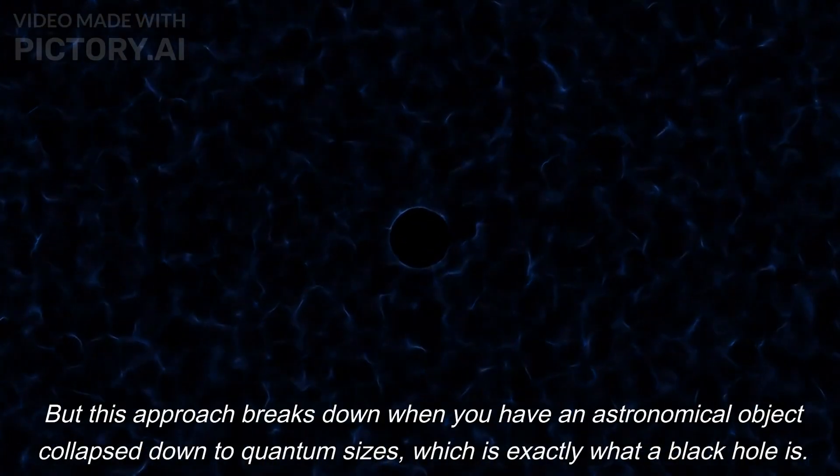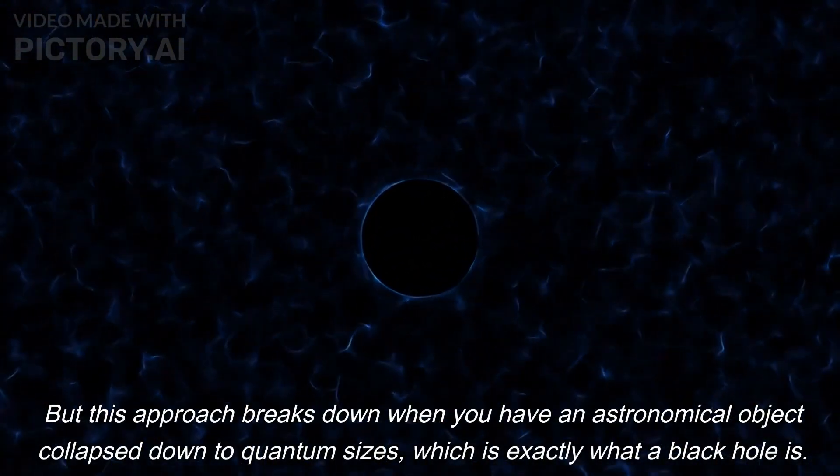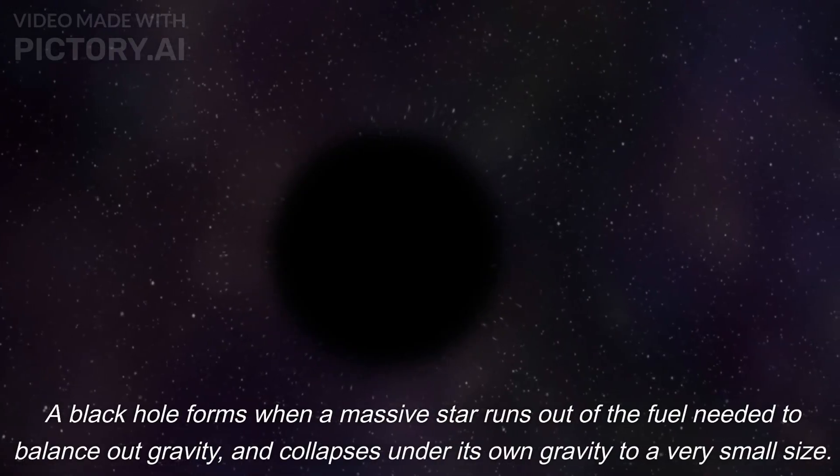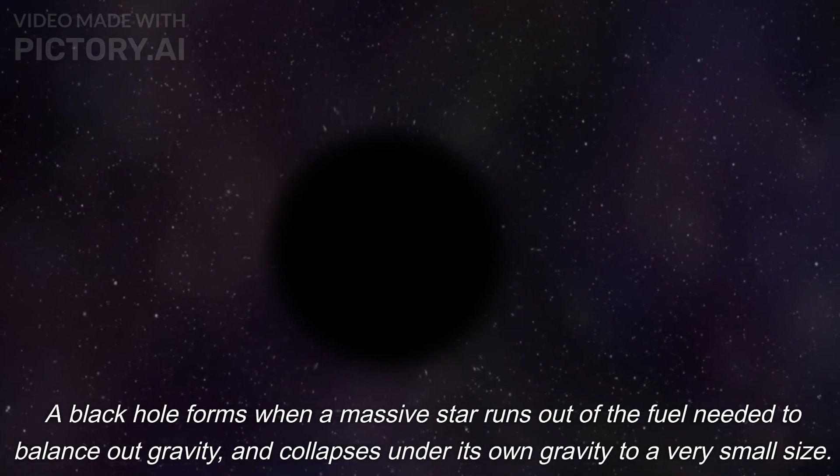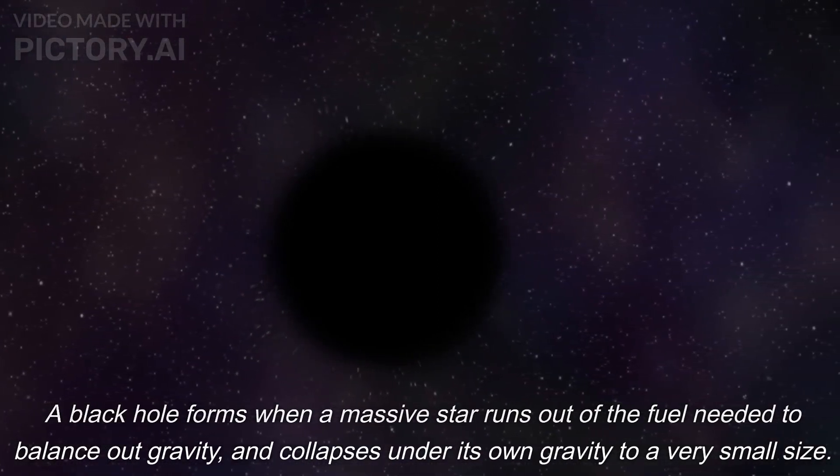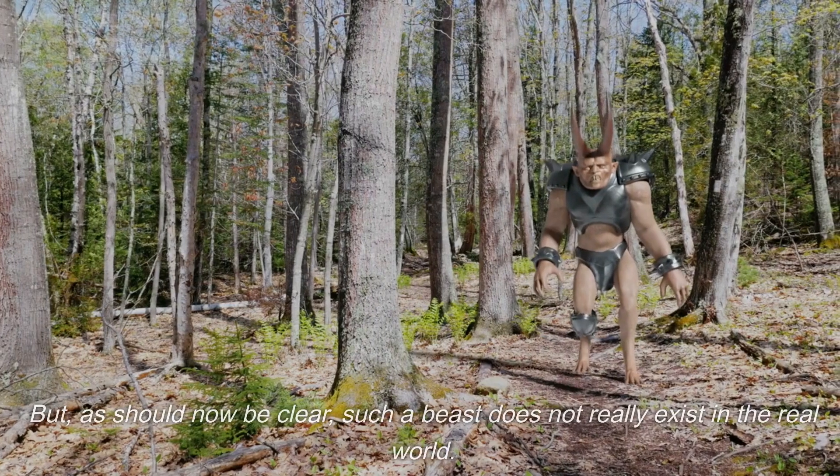But this approach breaks down when you have an astronomical object collapsed down to quantum sizes, which is exactly what a black hole is. A black hole forms when a massive star runs out of the fuel needed to balance out gravity, and collapses under its own gravity to a very small size. General relativity predicts that the star collapses to an infinitely small point with infinite density.